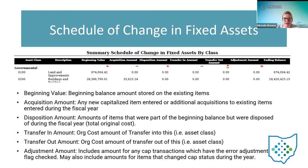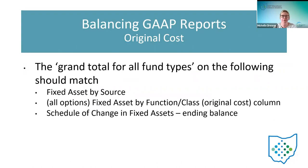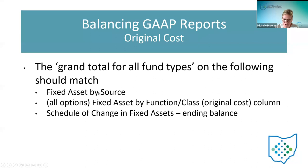The first three GAAP reports all relate to original cost, so they should all match each other. The Fixed Asset by Source grand total should match any option run from the Fixed Asset by Function Class — comparing original cost figures. Those should also match the Schedule of Change in Fixed Assets ending balance. So fixed asset by source, fixed asset by function class, and schedule of change in fixed assets ending balances should all agree.